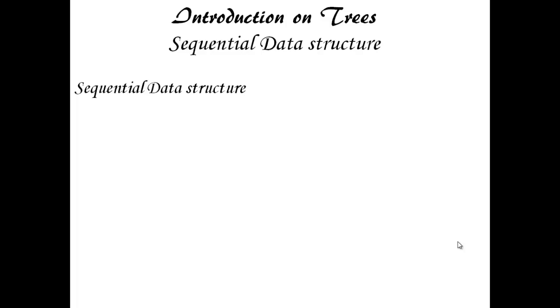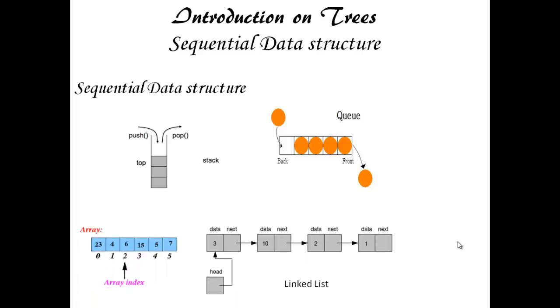Sequential data structure is a data structure in which items are connected in sequential order. It has start and end. We all would have seen about sequential data structures such as stacks, queues, arrays and linked lists in previous presentations.